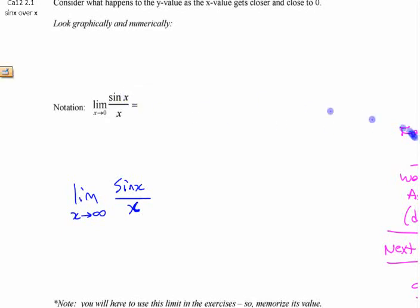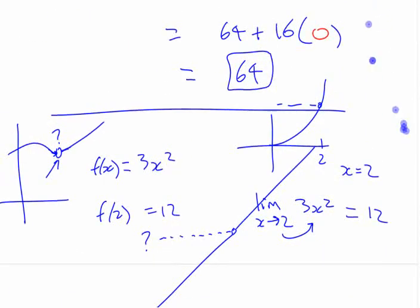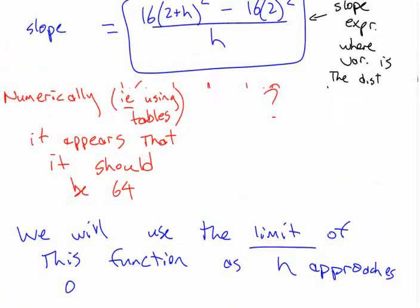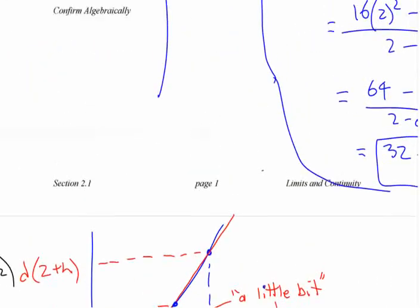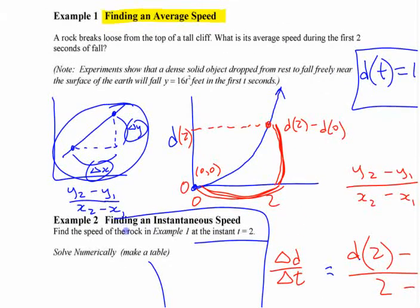We had started looking at this particular function here after having started to think about what a limit is. Can we wrap up any conversations we're having, please? We had worked through this looking at the limit using this situation involving speed, the speed of something that's falling. We had figured out what the instantaneous speed was, the slope at that point.